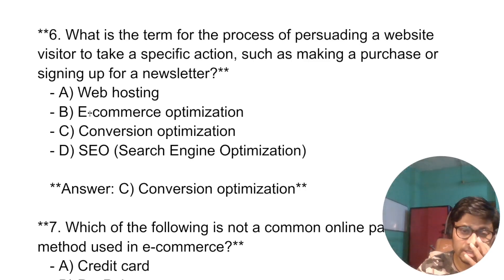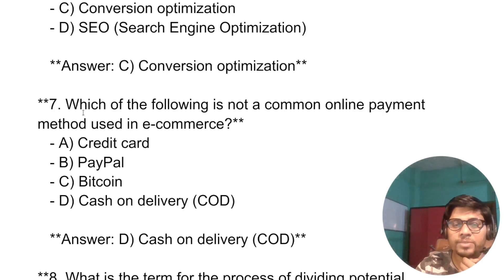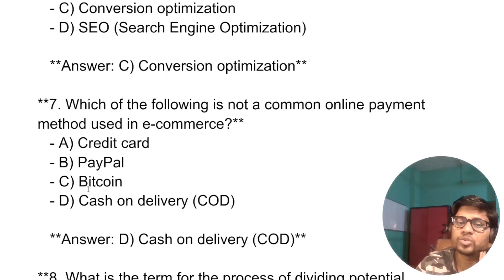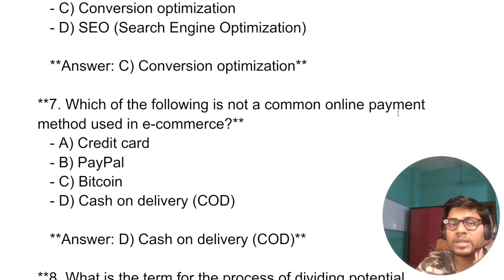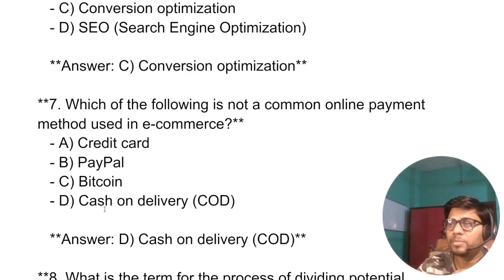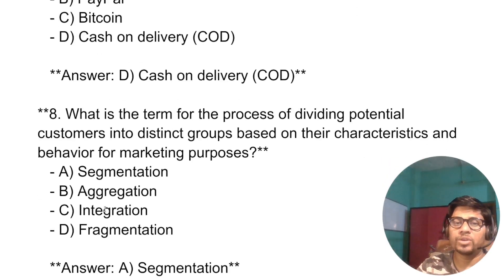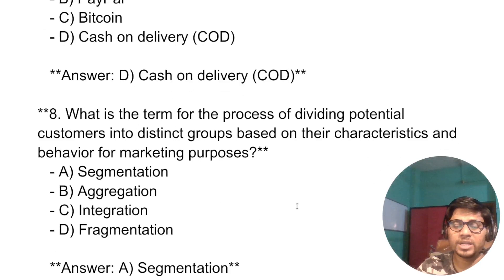Question: Which of the following is not a common online payment method used in e-commerce? Options are credit card, PayPal, Bitcoin, and cash on delivery. The answer is Bitcoin, as it is not a common standard online payment method used in most e-commerce platforms.